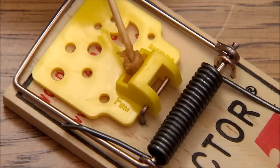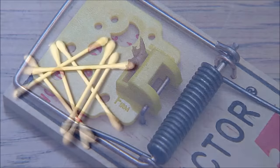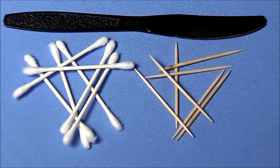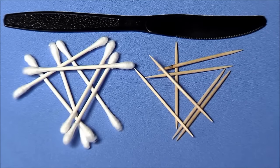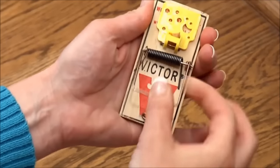As shown, be sure to use a Q-tip, toothpick, or another tool to bait so your scent is not transferred onto the trap. Pull the kill bar back and hold it in place with your thumb.